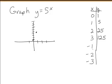Let's see what happens as we try negative x's. 5 to the negative 1 is 1 fifth. 5 to the negative 2 is 1 over 25. 5 to the negative 3, 1 over 125.